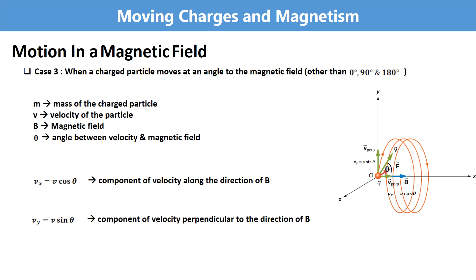We resolve the velocity vector into two components. The x component vx equals vcosθ; in the figure, vcosθ and the magnetic field are both in the same direction, so vcosθ is the component of velocity along the direction of the magnetic field. The y component vy equals vsinθ, which is the component of velocity perpendicular to the direction of the magnetic field.